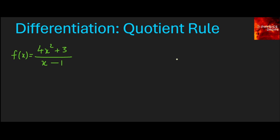Let's look at how to differentiate a function like this using the quotient rule. The quotient rule states as follows: if we have a function f(x) which is defined with a function u(x) in the numerator and a function v(x) in the denominator.